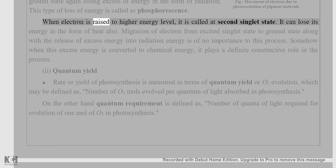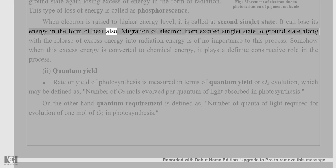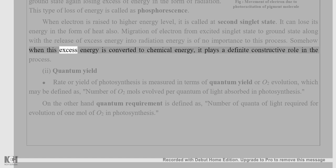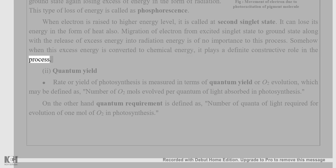When an electron is raised to a higher energy level, it is called the second singlet state. It can also lose its energy in the form of heat. The migration of an electron from the excited singlet state to the ground state, along with the release of excess energy as radiation, is of no importance to photosynthesis. But when this excess energy is converted to chemical energy, it plays a definite constructive role in the process.